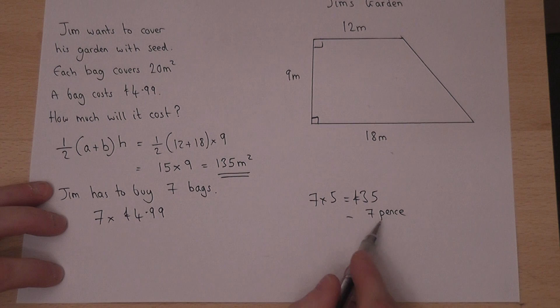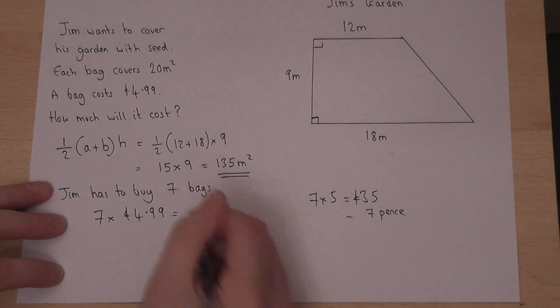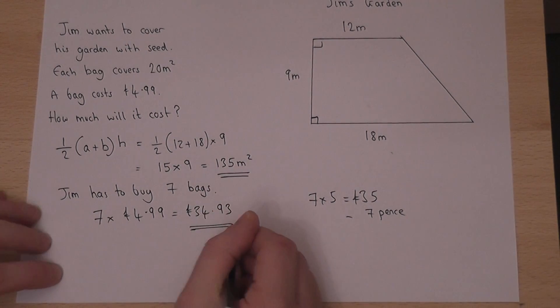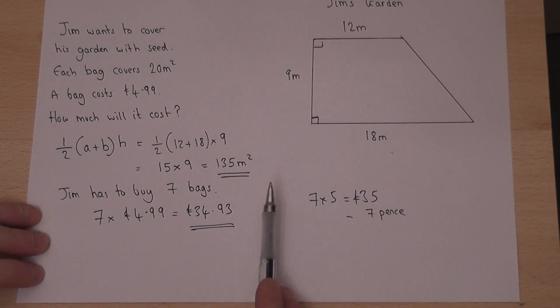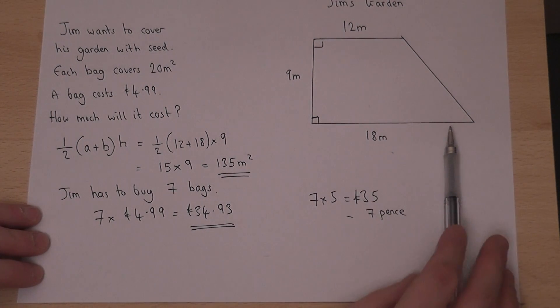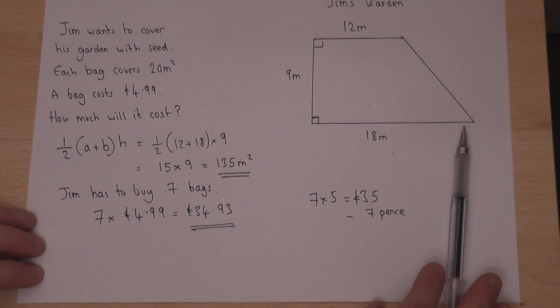So £35 take away seven pence gives a total price of £34 and 93 pence. So to cover Jim's garden requires £34.93 worth of seed to be bought.